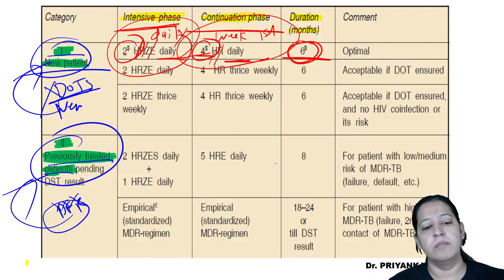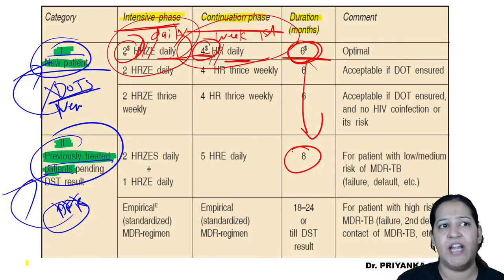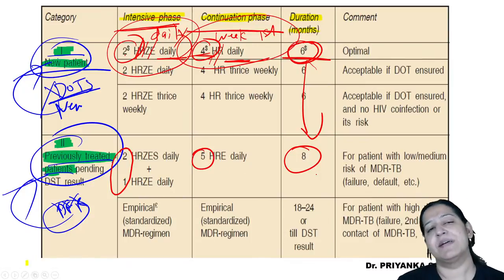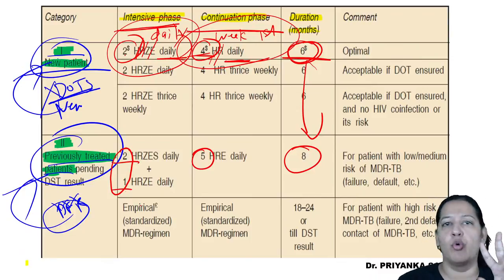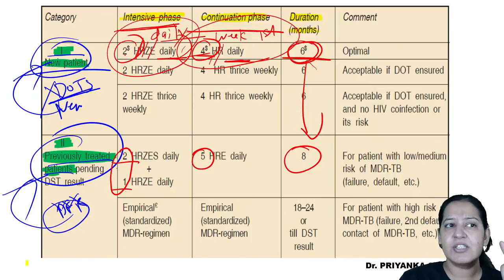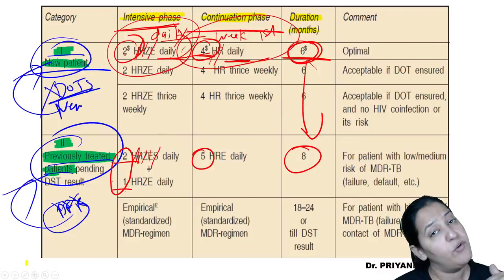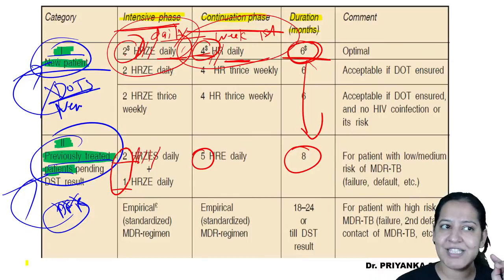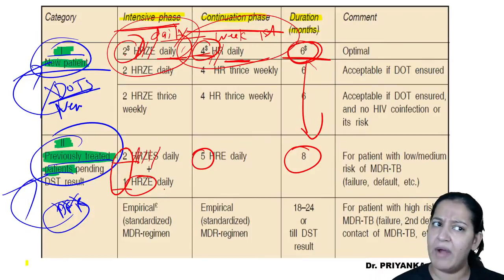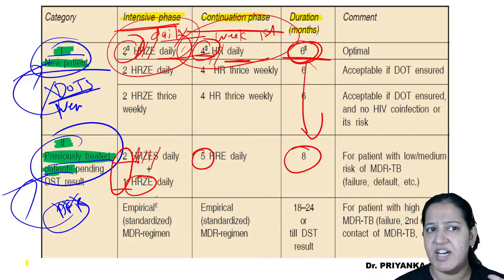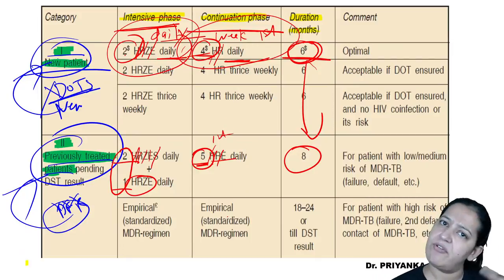For CAT2 patients, the total treatment is eight months: three months intensive phase plus five months continuation phase. The three-month intensive phase is divided into two parts: the first two months give HRZE plus one daily injection of S (streptomycin, which is injectable). The next one month gives only HRZE tablets — no injection. In the five-month continuation phase, only the first day of each week is observed, and the drug is HRE.